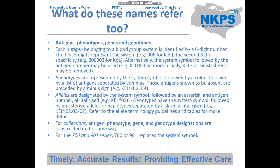Each antigen belonging to a blood group system is identified by a six-digit number. The first three digits represent the system — for example, 006 is the system name for Kel. The second three represent the specificity, so 006003 is talking about KpA because it is the third antigen in the Kel blood group. Alternatively, the system symbol followed by the antigen number may be used, so KEL003 is still KpA, or more usually you just write KEL3 and drop the zeros.